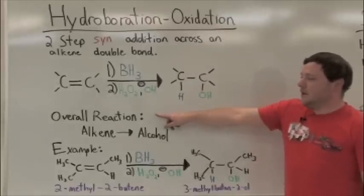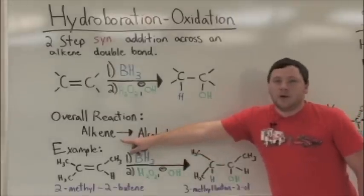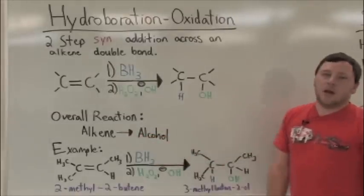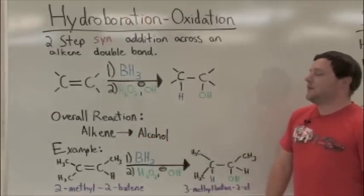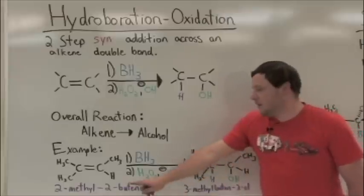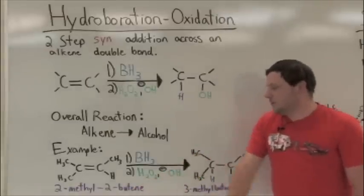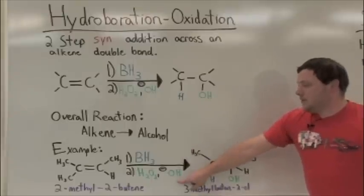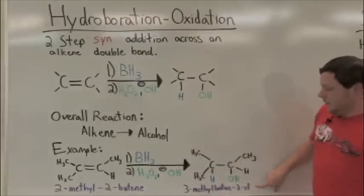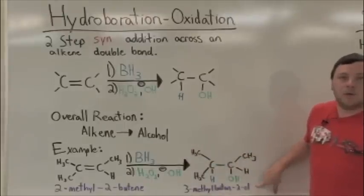Overall, this reaction is very useful for converting alkenes to alcohols as we'll see momentarily. And a specific example that we'll focus on is 2-methyl-2-butene going through both steps and being converted into 3-methyl-butene-2-ol.